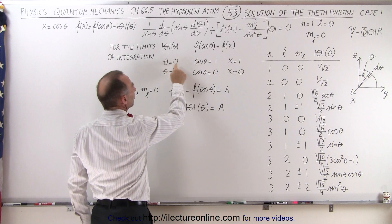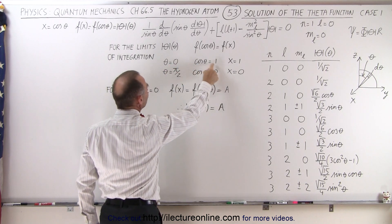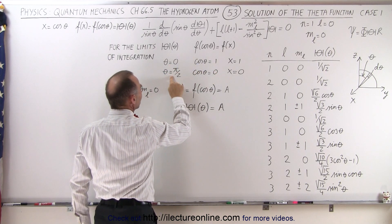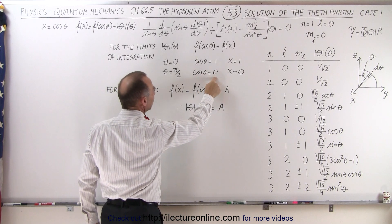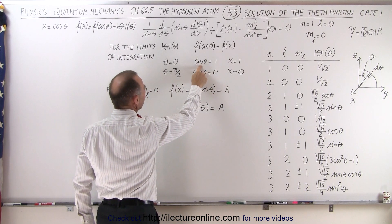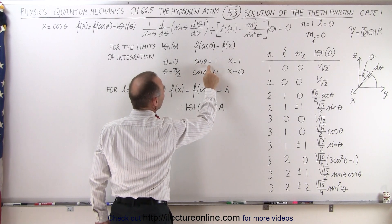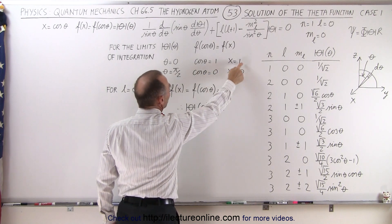When theta equals 0, the cosine of theta equals 1, and when theta equals pi over 2, the cosine of theta equals 0. Since the cosine of theta was substituted for x, we're then going to have x limits from 0 to 1.